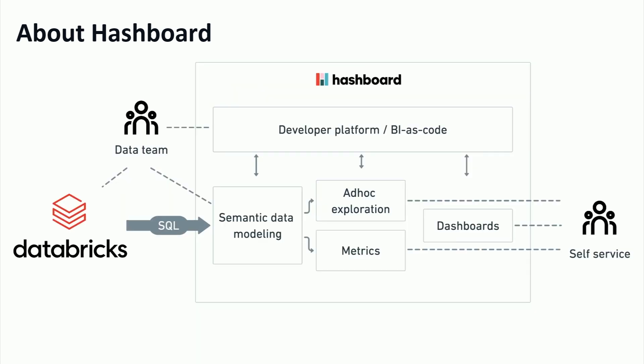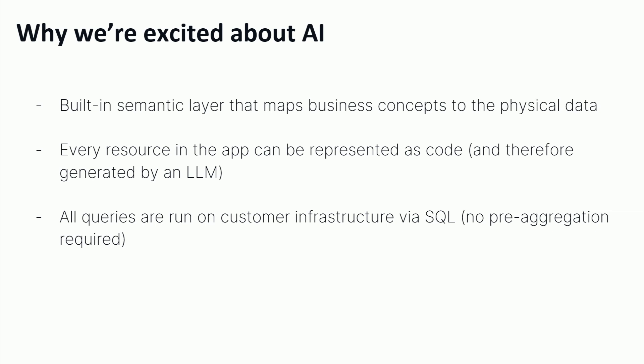This is how it works architecturally — we're issuing SQL queries directly to your Databricks data warehouse. After your data team has set up the models, it allows your end users to issue their own queries without writing their own SQL. We are very excited about AI at Hashboard because we think there are a lot of components here that are useful for an LLM. We have a semantic layer already, which means we can teach the LLM about your business. All of your resources can be represented as code, and it turns out LLMs are quite good at writing code. And because we're issuing queries directly to your infrastructure, there's no pre-aggregation we have to do — so we can leave a lot up to the AI to decide what queries to write.